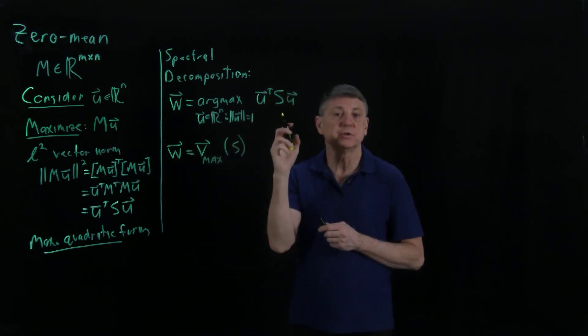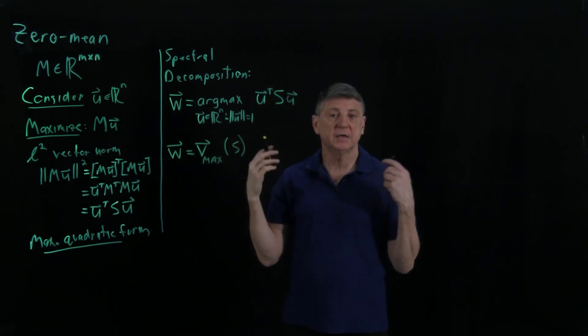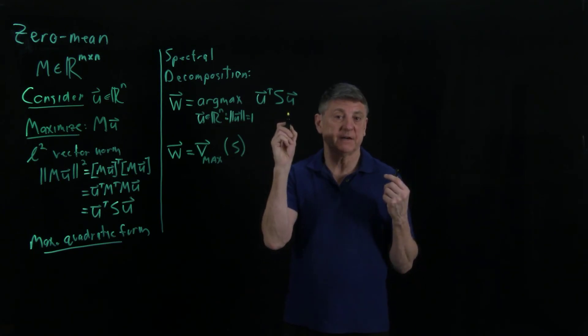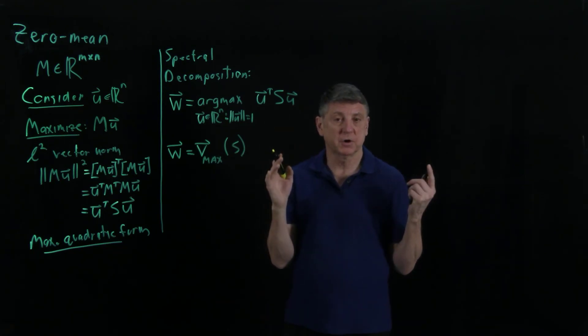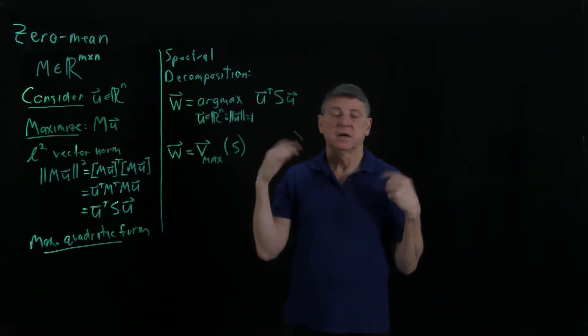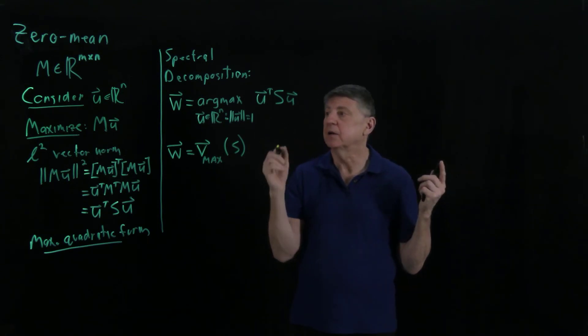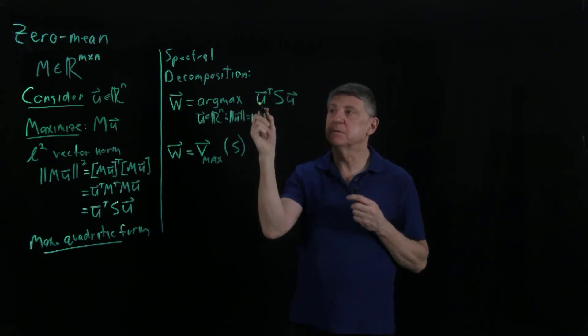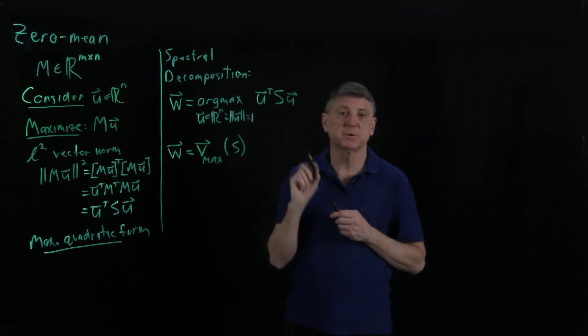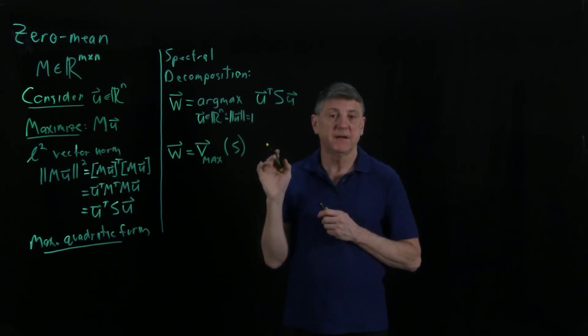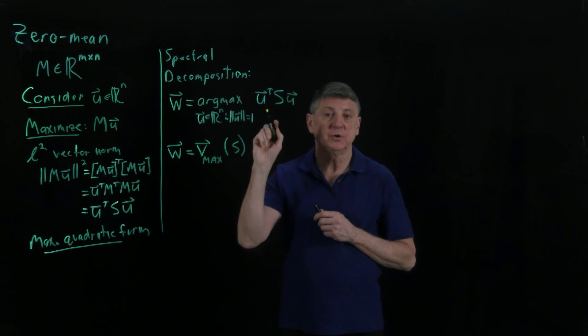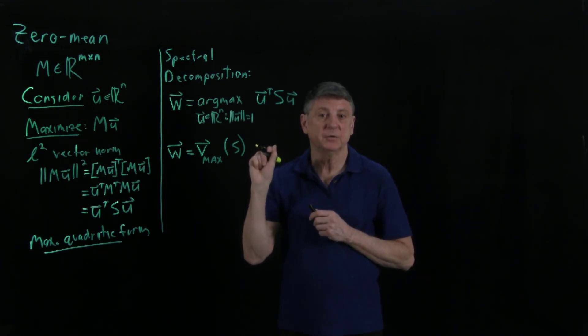We can use the spectral decomposition and we can write S times any vector U using the spectral decomposition. When we do that and multiply U transpose, the maximum value is achieved when U is the eigenvector of the largest eigenvalue of the matrix.